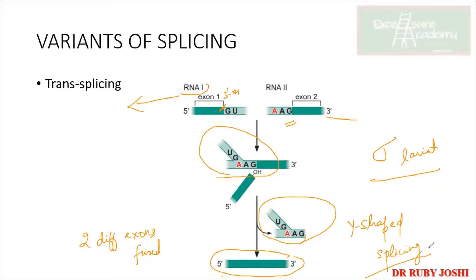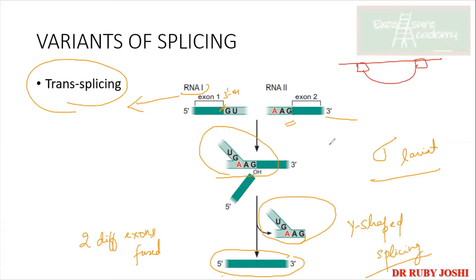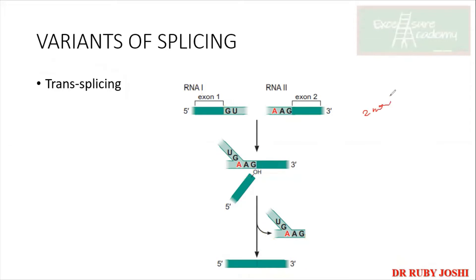The shape formed in trans splicing is called Y-shaped splicing. If an exam does not mention trans splicing, it may be referred to as Y-shaped splicing. The answer to give is that splicing is happening between two different mRNAs or RNAs — different from normal cis splicing where exons within the same mRNA are fused.